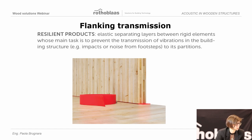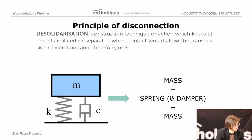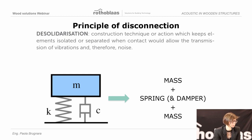In order to do that, we need to use resilient products, which are elastic separating layers between rigid elements whose main task is to prevent the transmission of vibration in the building structure. We need to use the principle of disconnection.